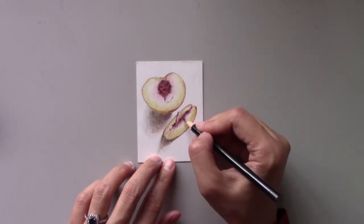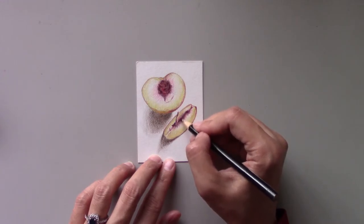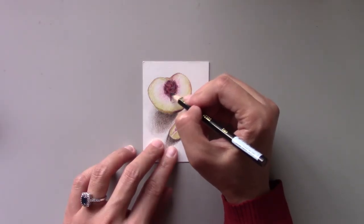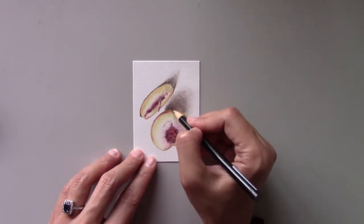Finally, I use black to increase the contrast. I darken the center of the peach, the shadows under it and the pit. Here's the finished painting of the white peach.